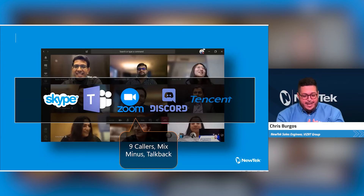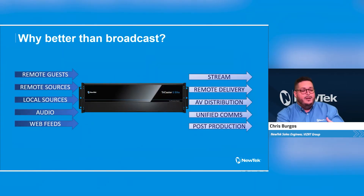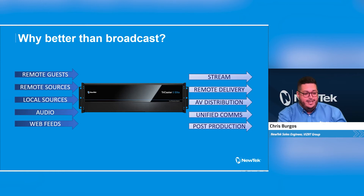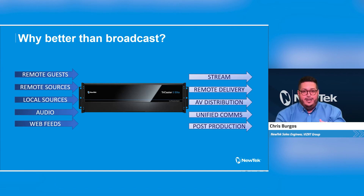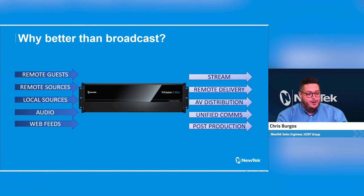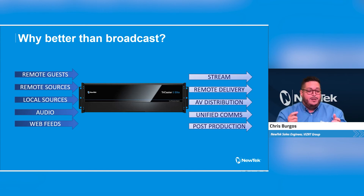Where this really ties together is here: when working with a TriCaster, we now have the ability to work with local sources, audio, web feeds, SRT, remote sources, and remote guests. The variety of ways we can grab content is so large. With things like NDI 5 and Live Call Connect, there are a lot of ways to get somebody — whether on their cell phone, laptop, or otherwise — into your TriCaster's production pipeline. Then you're leveraging the switcher that is built upon NDI. NewTek created NDI, and now we have the ability to stream content, do remote delivery, distribute in our AV location, and have comms and post-production pipelines.